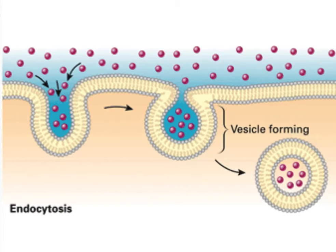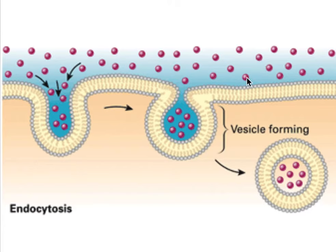Endocytosis is the process in which cells absorb molecules — the food molecules — by engulfing them. The plasma membrane creates a small deformation inwards called invagination, and in this invagination the substances to be transported are captured. This deformation then pinches off from the membrane on the inside of the cell, creating a vesicle containing these captured substances.